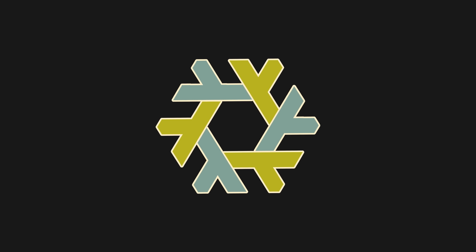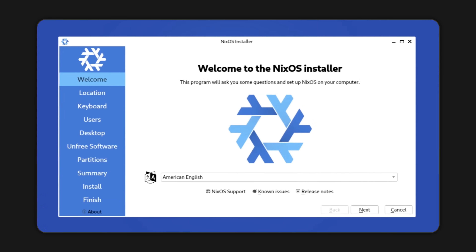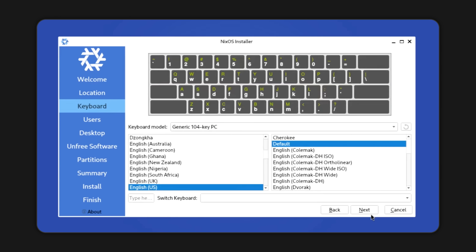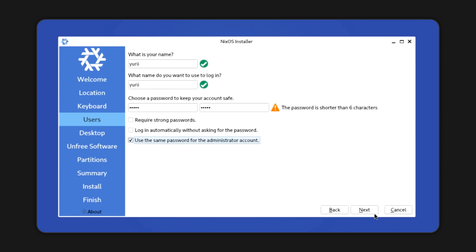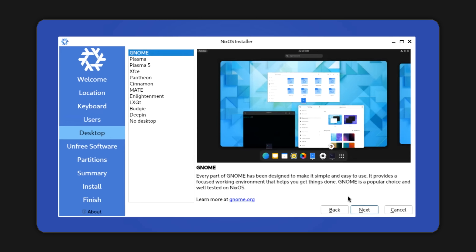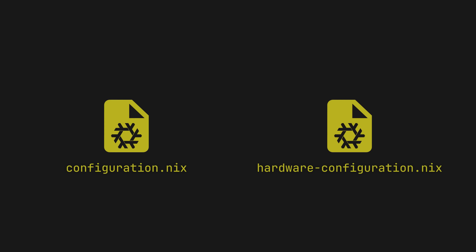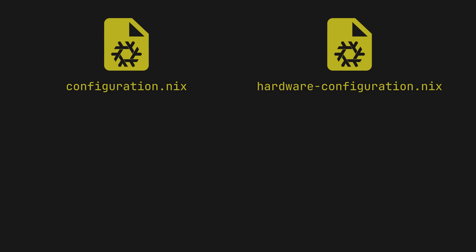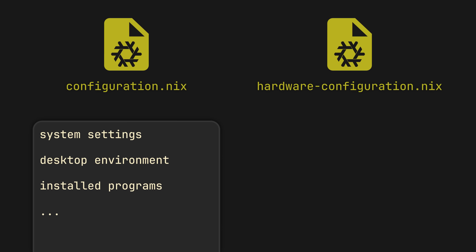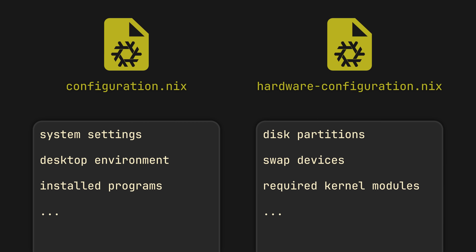So you have installed NixOS and now want to configure it. Remember how during the installation you selected the language, time zone, desktop environment and so on? Based on these preferences, NixOS has just generated two files for you — configuration.nix and hardware-configuration.nix. The first one contains all the general options like your system settings, selected desktop environment and installed programs, while the second one has options for stuff you won't ever have to touch, like your disk partitions, swap devices and kernel modules required for your hardware.